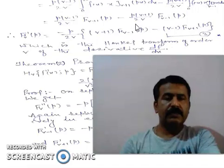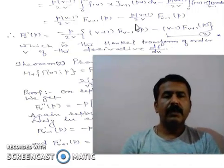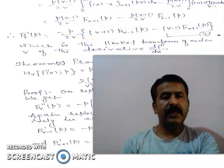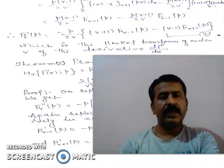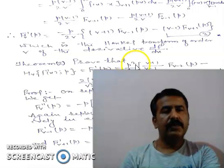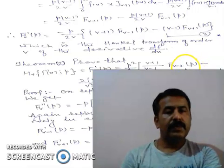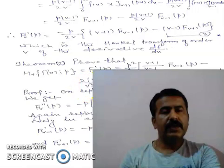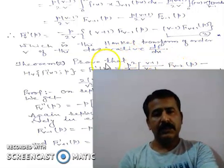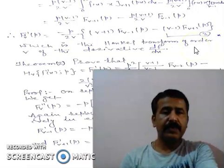This is the first derivative form of the Hankel transform. Now we have to evaluate the second derivative of the Hankel transform. The theorem for the second derivative is: h_v of f''(x) of p equals f''_v(p) = [p²/4]·[(v+1)/(v-1)]·f_{v-2}(p) minus [2(2v²-3)/(v²-1)]·f_v(p) plus [(v+1)/((v-1)(v+2))]·f_{v+2}(p).